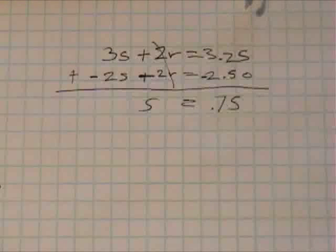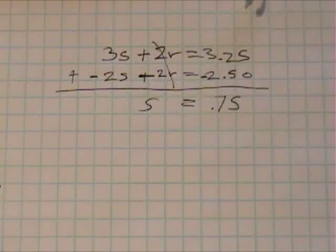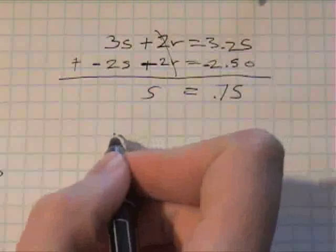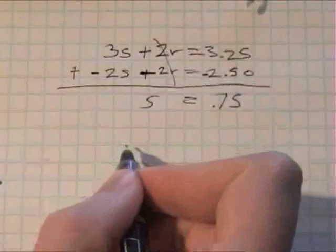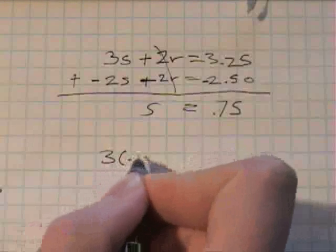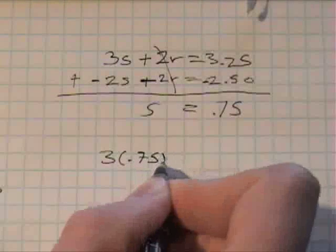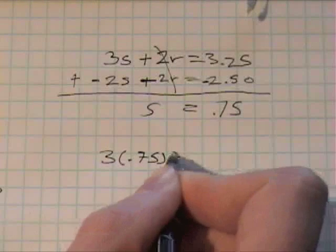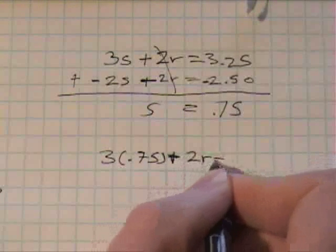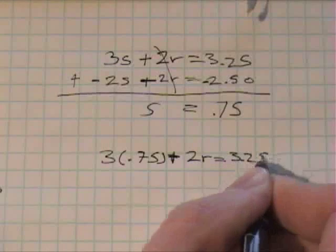So let's go ahead and plug that back into one of the equations to figure out what r, rice, is selling for. Let's use the top equation. So 3 times 0.75 plus 2r equals 3.25.